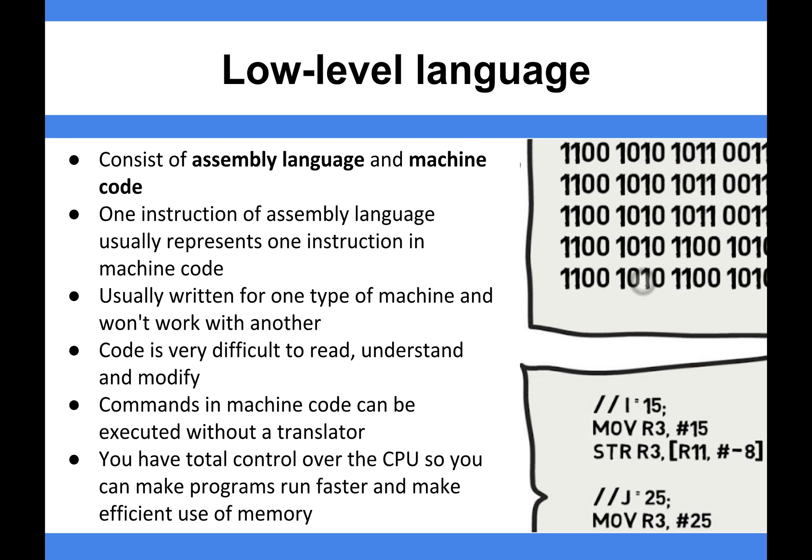Machine code is essentially just binary, just ones and zeros. And then you've got assembly language, which is a little bit more structured, but there's a different video on that if you want to look at the details of assembly language. Those two together are known as low-level languages.